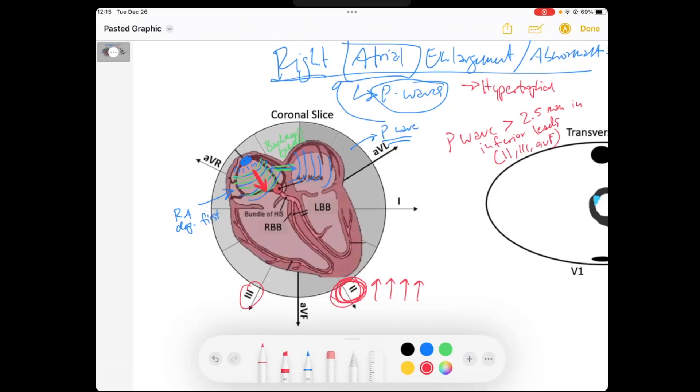So if the P-wave amplitude is greater than 2.5 millimeters in any of these inferior leads, which would be capturing that right atrial depolarization, then we can say that this would meet criteria for right atrial enlargement.